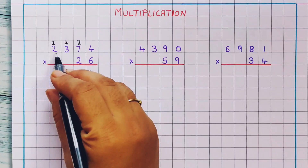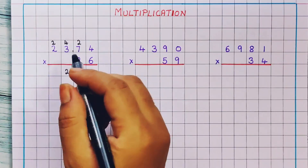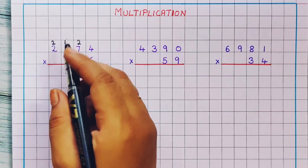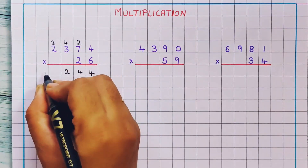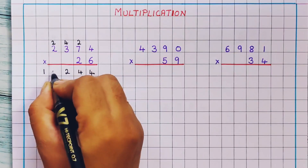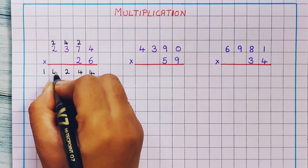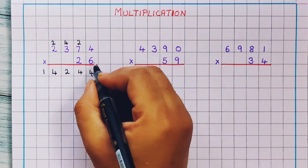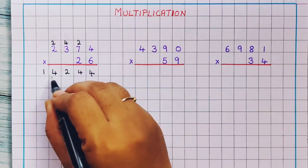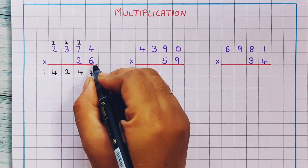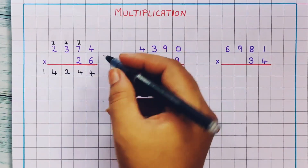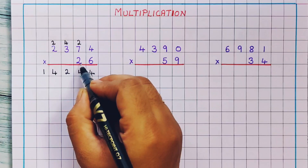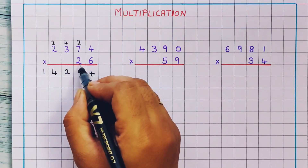Now 6 2's are 12. 12 plus 2 is 14. So I will write here 1, 4 — 14. So this I got by multiplying using 6. Next I will do multiplication using the digit in the next place, that is in the 10th place, that is 2.